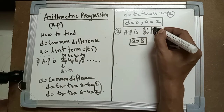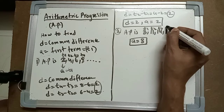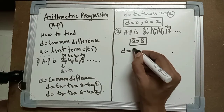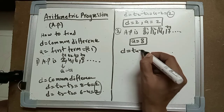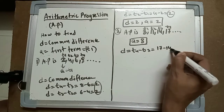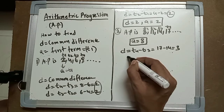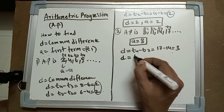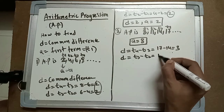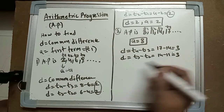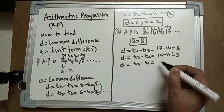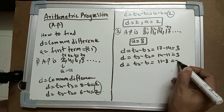We write down t1, t2, t3, and t4. Now we find the common difference. d equals t4 minus t3, which is 17 minus 14 equals 3. Again, d equals t3 minus t2, which is 14 minus 11 equals 3. And d equals t2 minus t1, which is 11 minus 8 equals 3.